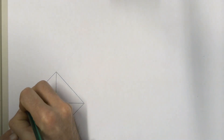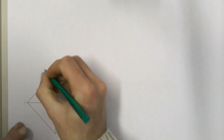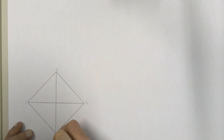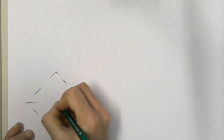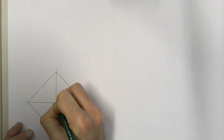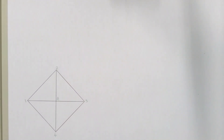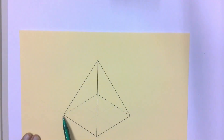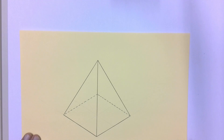We're going to label our top view by labeling each of the base corners first — 1, 2, 3, and 4 — and then we're going to use A to label the top point. That A is our top point, and we've labeled each of the four different corners that we can see in our top view.